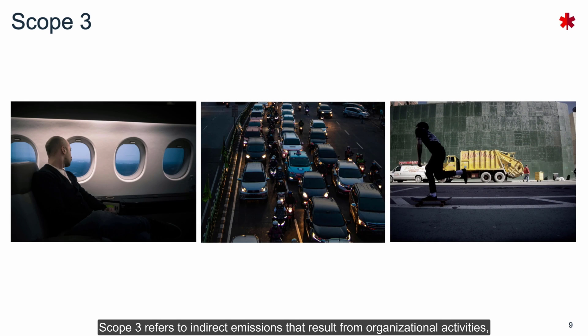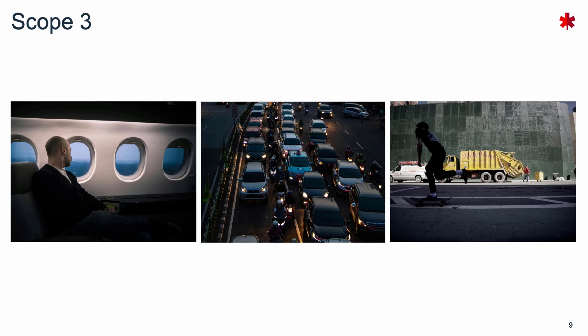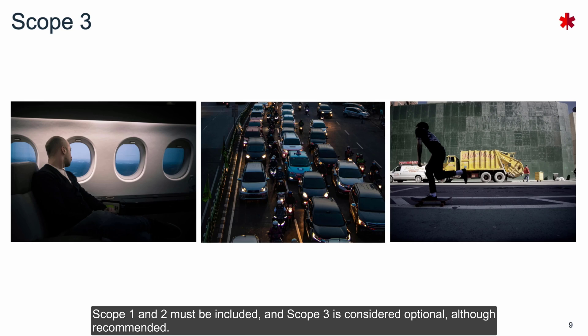Scope 3 refers to indirect emissions that result from organizational activities such as business travel, employee commuting, or waste in operations, even if not directly controlled or produced. When measuring your carbon footprint in alignment with the greenhouse gas protocol, Scope 1 and 2 must be included, and Scope 3 is considered optional, although recommended.